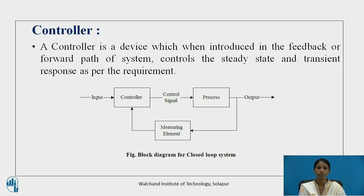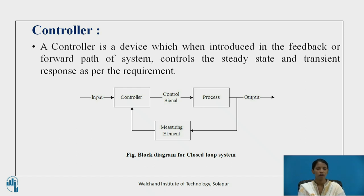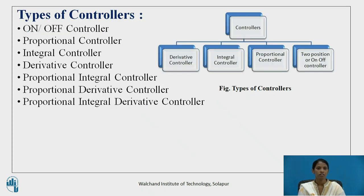As we have studied previously, a controller is a device which, when introduced in the feedback or forward path, controls the steady state and transient response as per the requirement. This is a block diagram of a closed loop control system. The input is given to the controller, and the input of the processor is the controlled signal, which is the output of the controller. There are various types of controllers used in place of the controller.